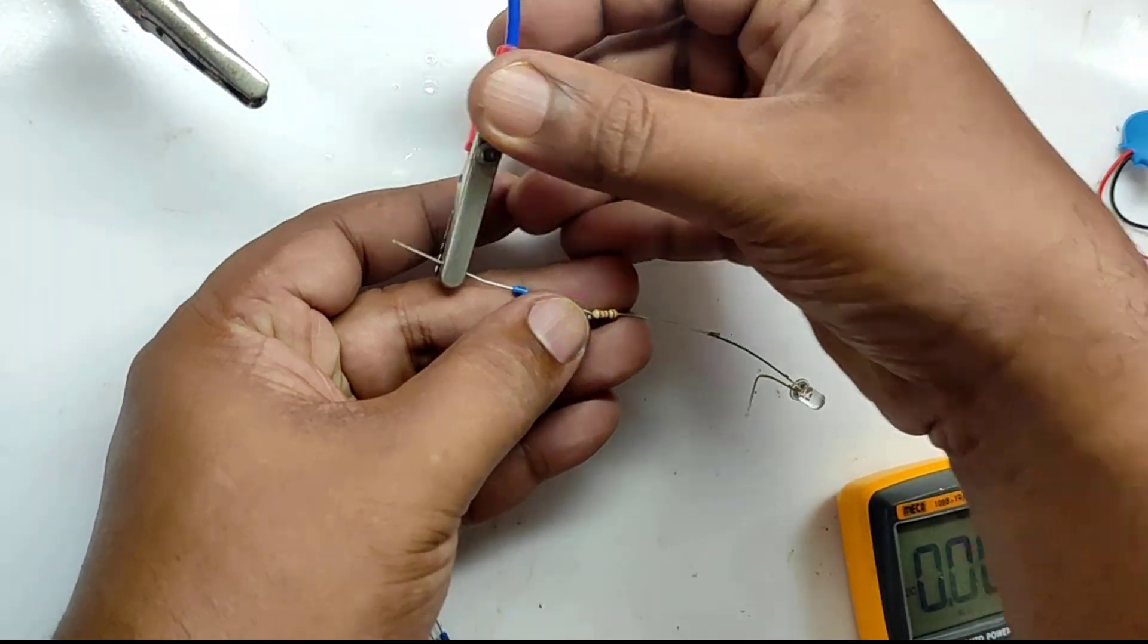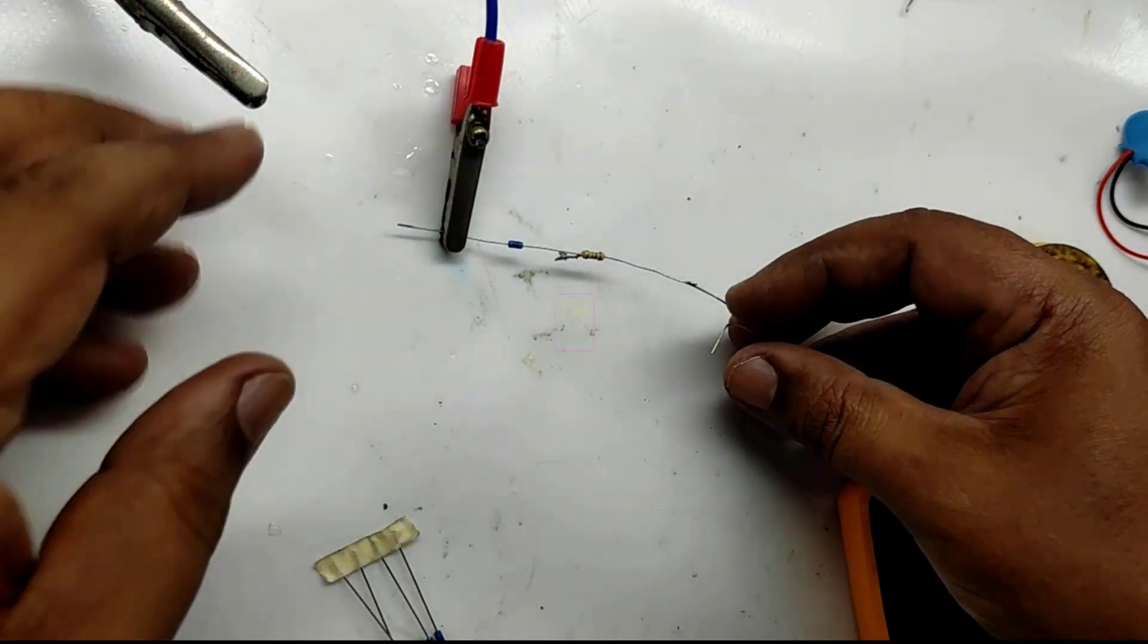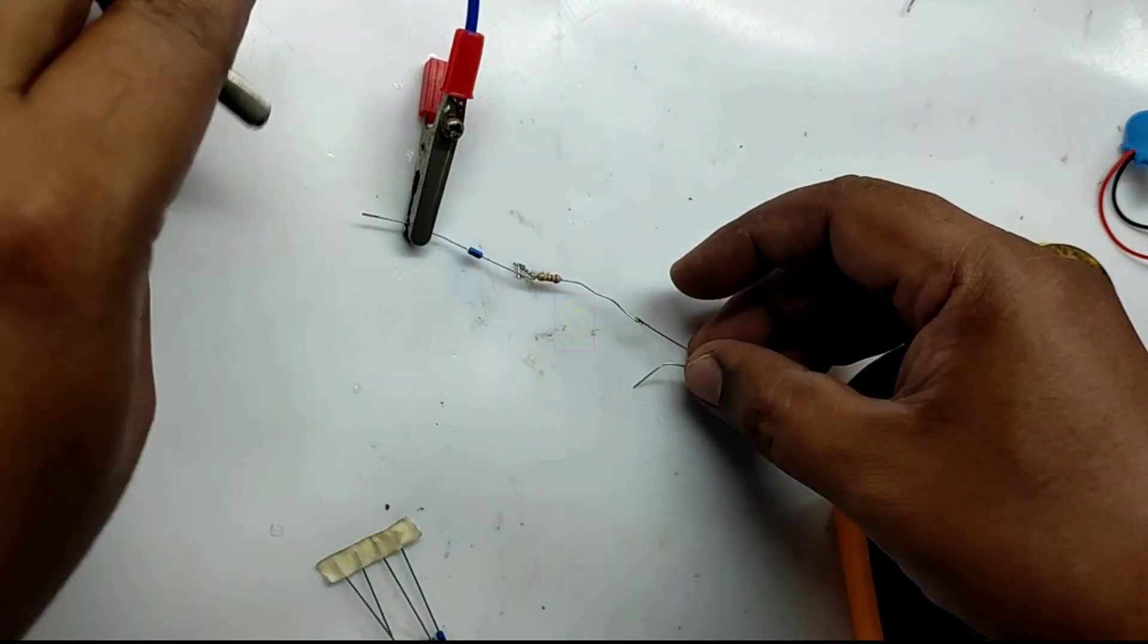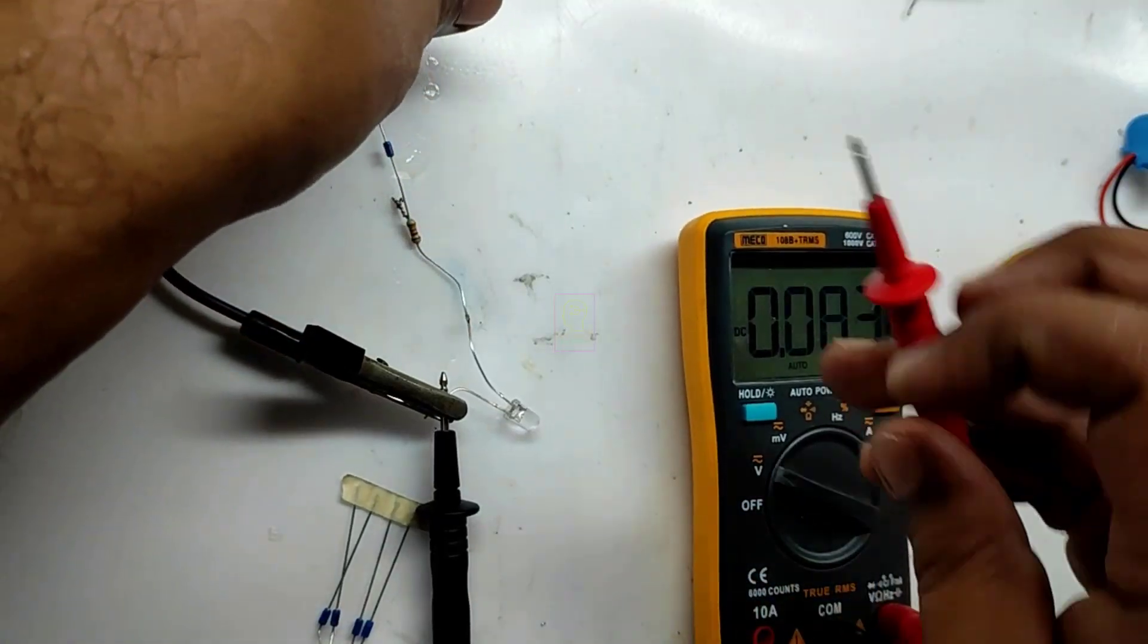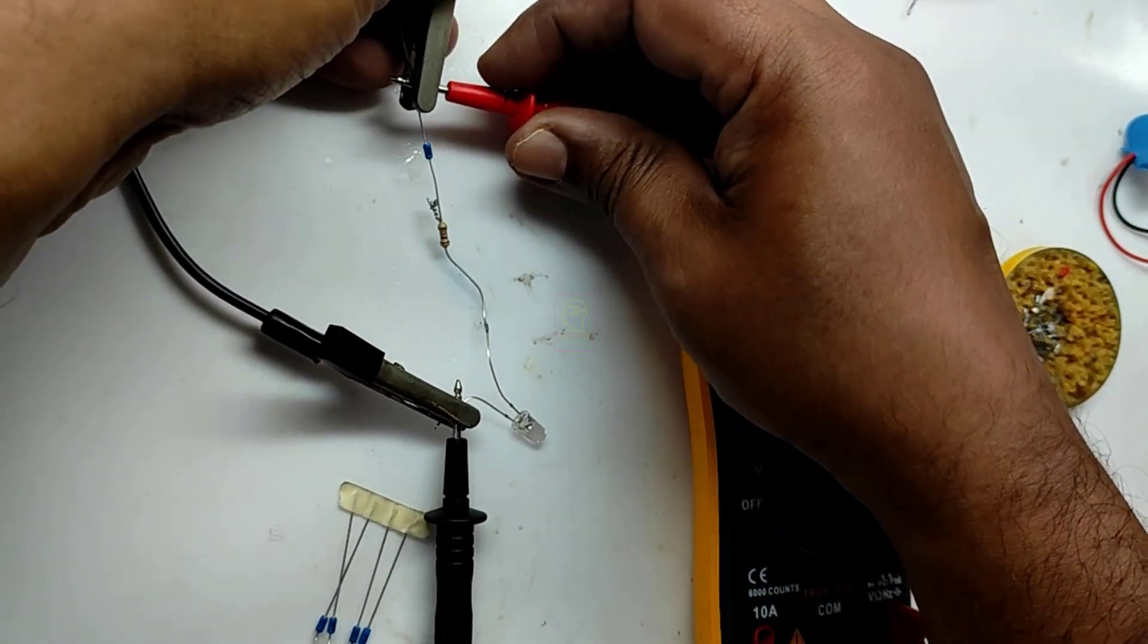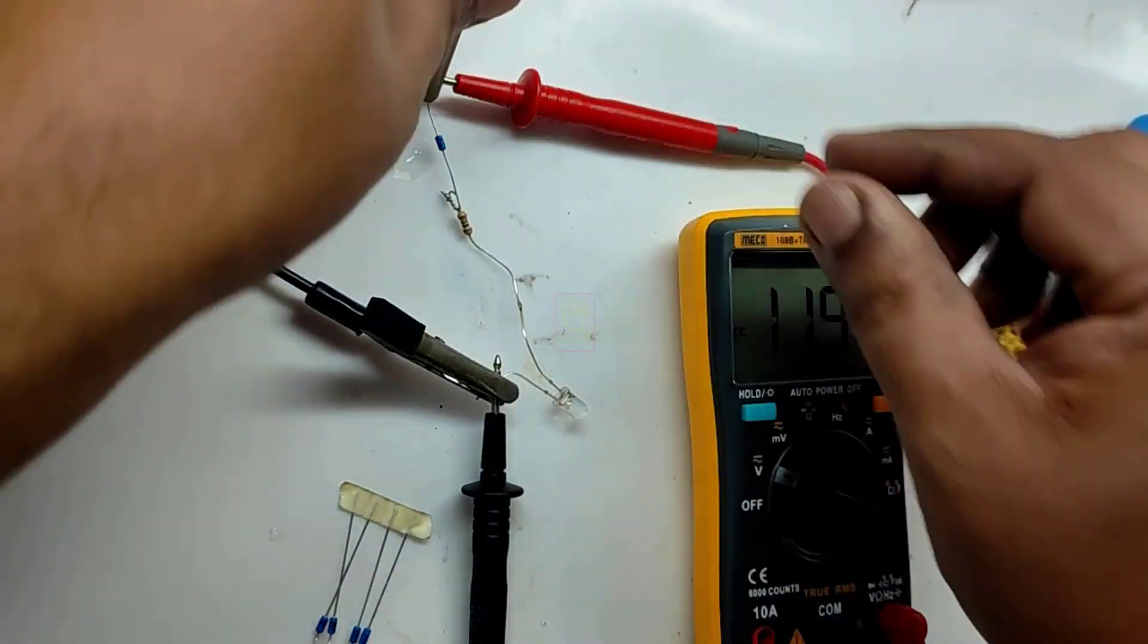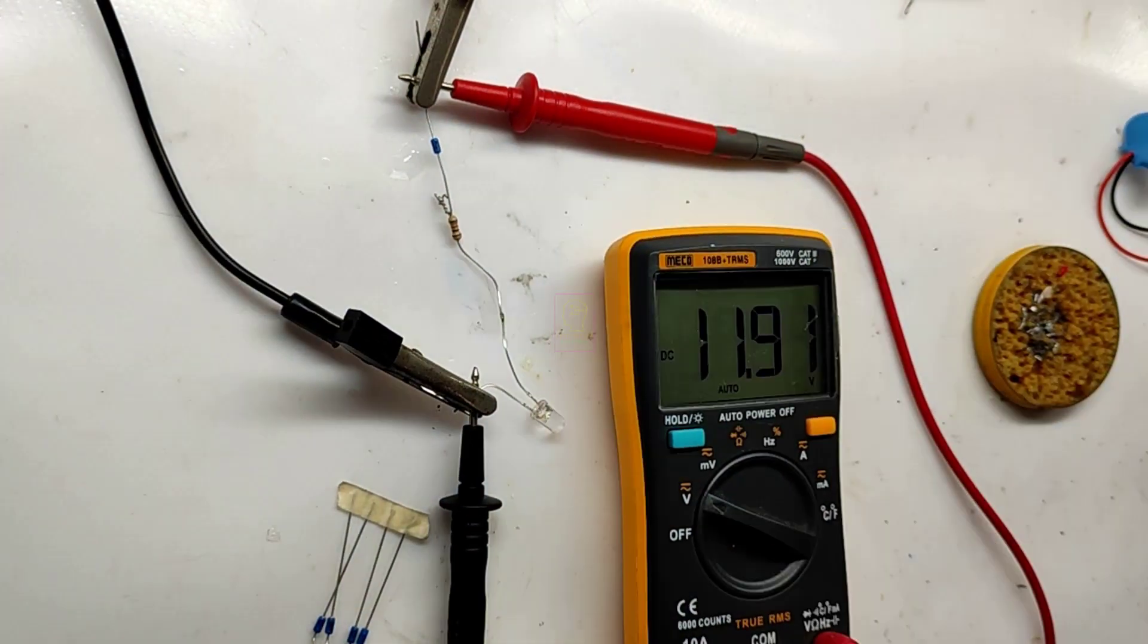My bench power supply has a range of 1 to 36 volts, which is enough to break down a DB3 DIAC. I am also connecting the multimeter probe to the input power supply. You can see it is showing nearly 12 volts. Now I will slowly increase the input power supply.